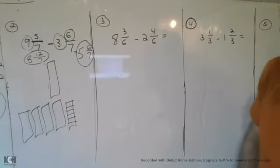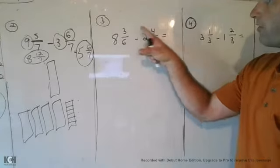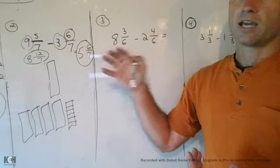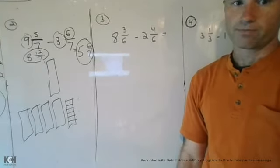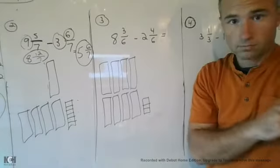So, 8 and 3/6 minus 2 and 4/6. You and I know I can't take four away from three. So, following the steps that we've been practicing, go ahead and find the answer to this problem. Okay, hit the pause button now, please.